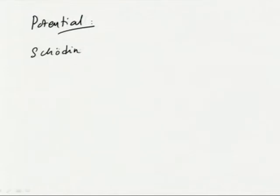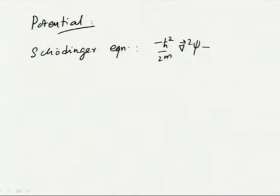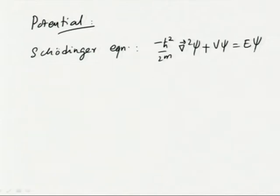What we have in the case of the Schrödinger equation is: minus ℏ² over 2m ∇² ψ plus V ψ equal to E ψ. Note that I have not set ℏ equal to 1 here just for clarity, but in the other equations I will take ℏ equal to 1.